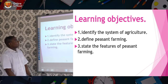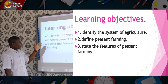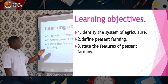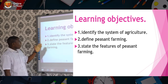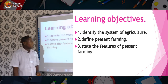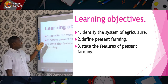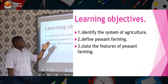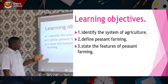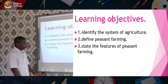Learning objectives. At the end of this lesson, students are expected to be able to: number one, identify the system of agriculture; number two, define peasant farming; number three, state the features of peasant farming.